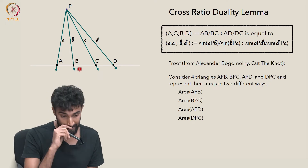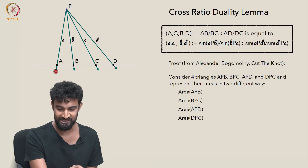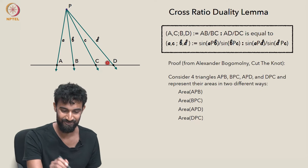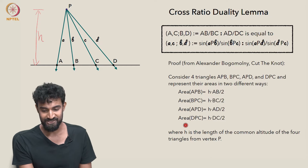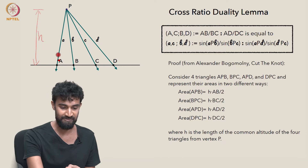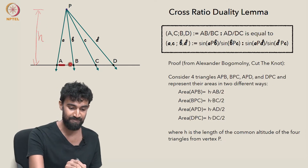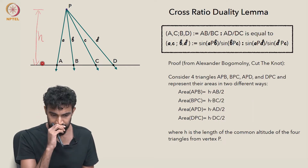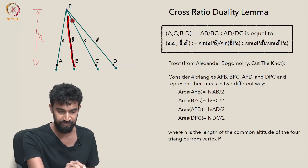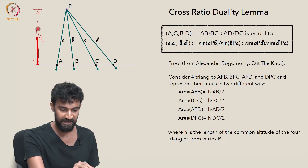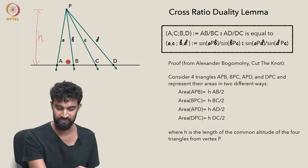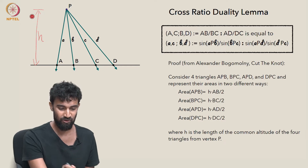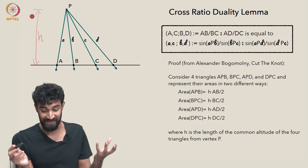We want to look at the areas of APB, APD, BPC, and DPC — with DPC being negative because it's in the wrong direction. One way of representing the areas is base times height over two. The area of APB is one-half times base AB times height H. Similarly, the area of BPC is BC times H over two. The area of APD is AD times H over two. And the area of DPC is DC — which is negative — times H over two.